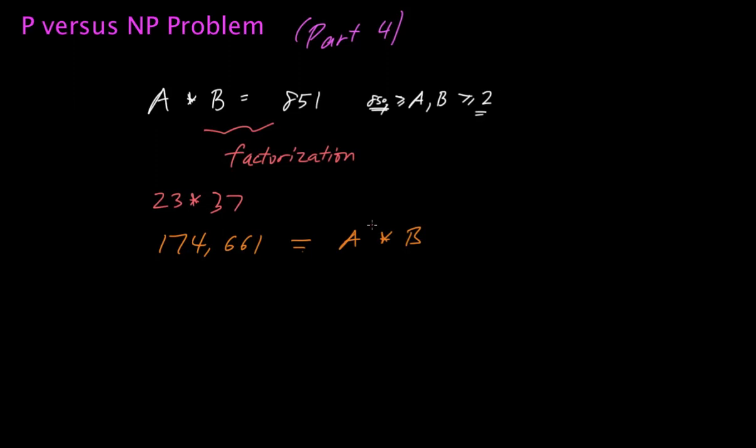Even though, interestingly enough, a computer can take two 1,000-digit numbers and multiply those numbers in a fraction of a second.